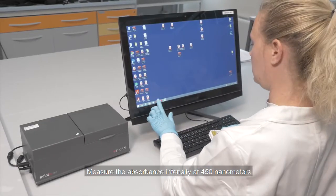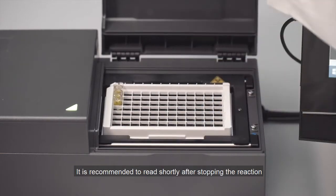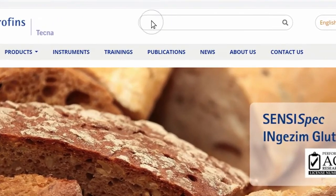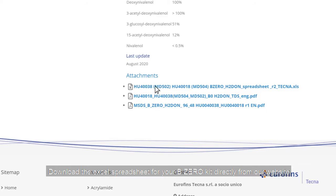Measure the absorbance intensity at 450 nm. It is recommended to read shortly after stopping the reaction. Download the Excel spreadsheet for your B0 kit directly from our website.